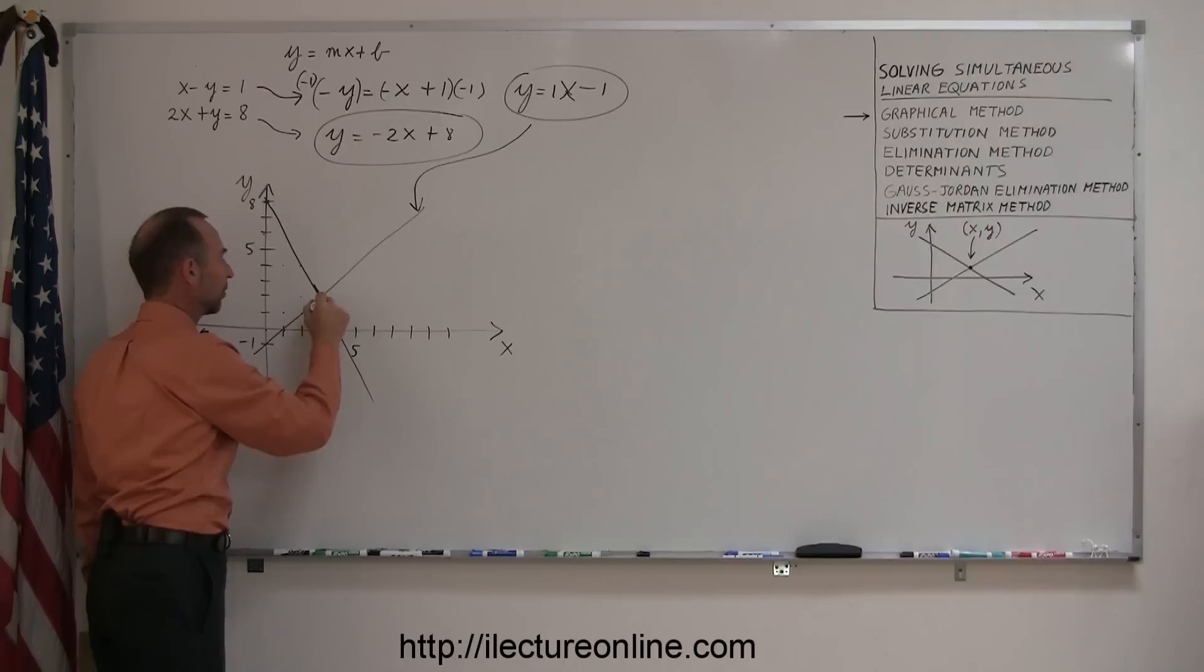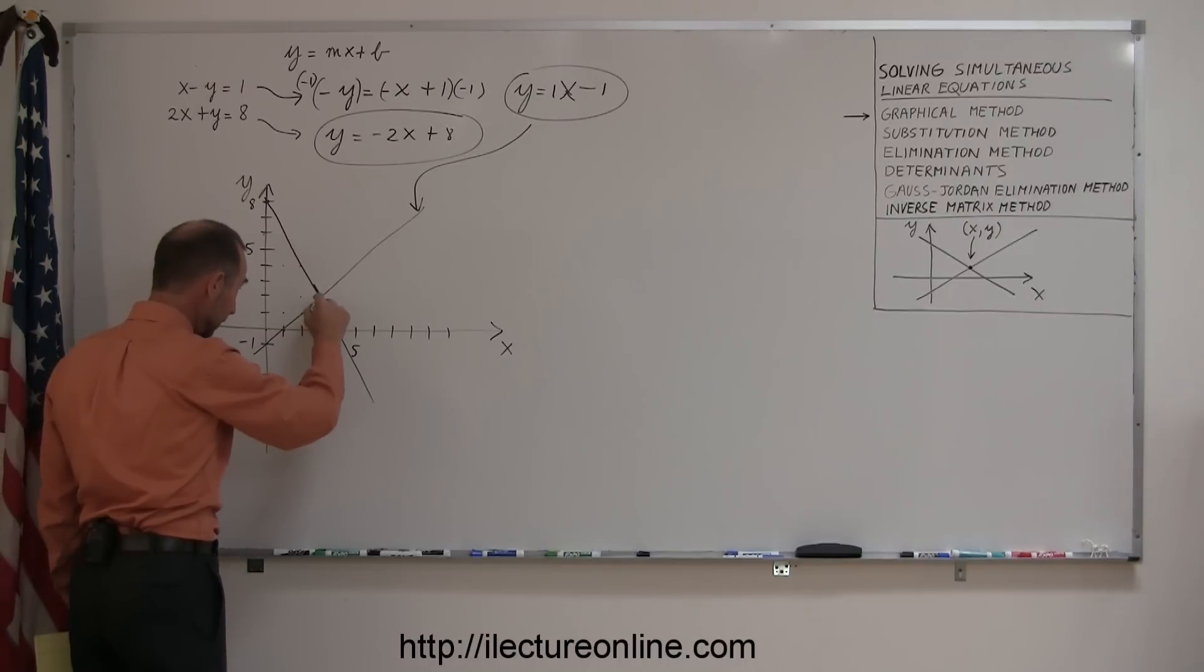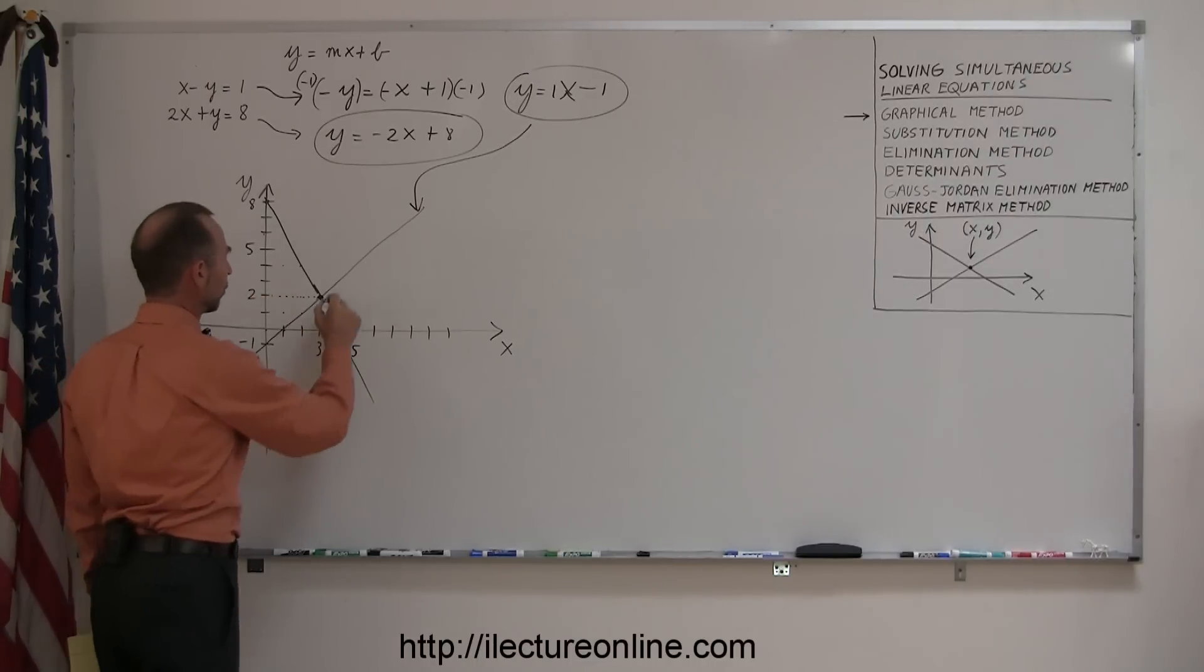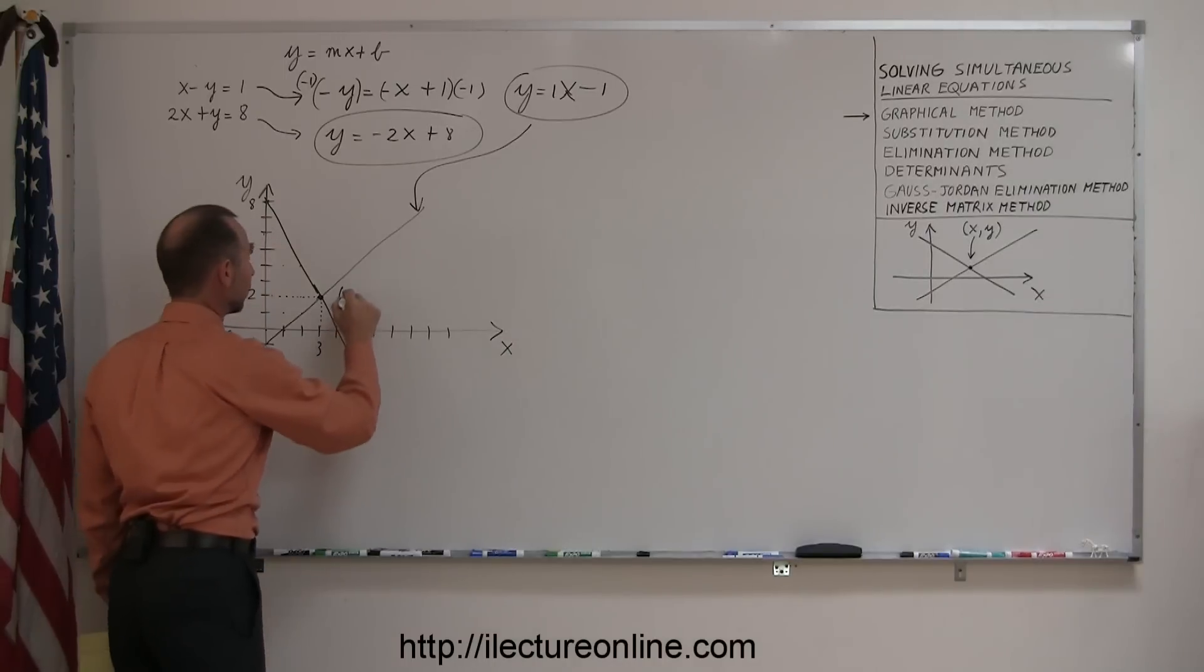And notice I found the place where the two lines cross. Now, if I come down here, I can see that the x value of that point is 3. If I go across this way, I can see that my y value of that point is 2. So the solution to these two equations is 3 for x and 2 for y.